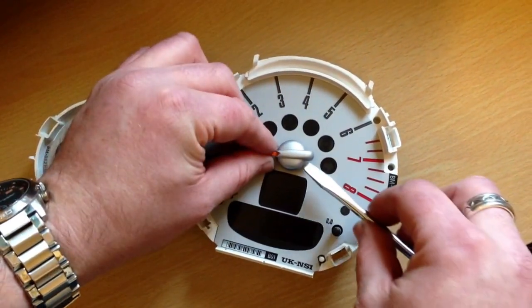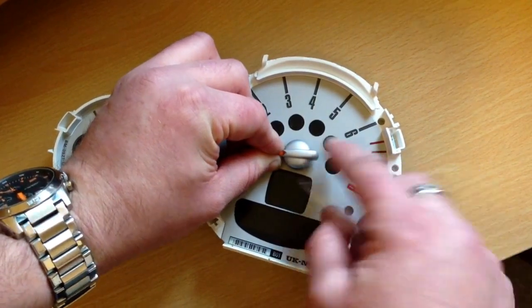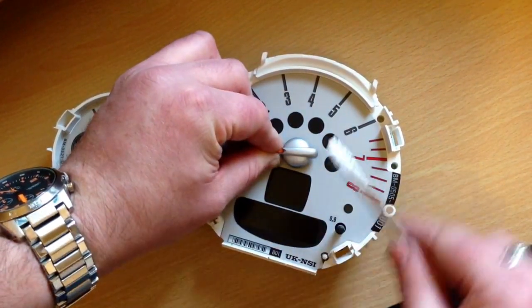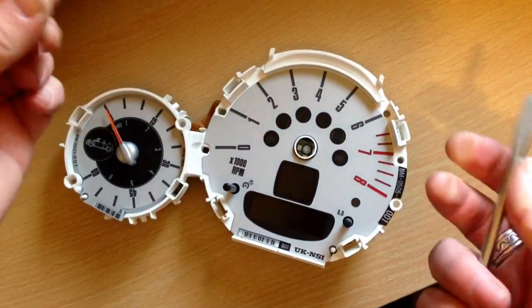So again, just hold that steady. Get your screwdriver just underneath there. You do have to lift the needle slightly. You can see the distortion there. Get it in there anyway, and twist and pull, and it comes straight off like that.